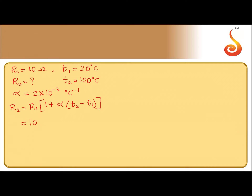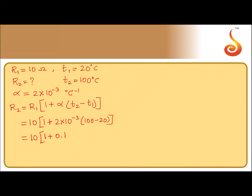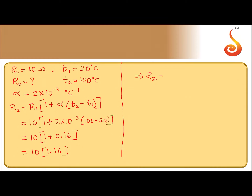R1 is 10. 1 plus alpha — which is 2 into 10 to the power minus 3 — into (T2 minus T1), that is 100 minus 20, which gives 80. So 80 into 2 is 160, and 160 into 10 to the power minus 3 gives 0.16. So this turns out to be 10 into 1.16, which implies R2 is equal to 11.6 ohm.